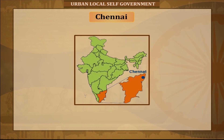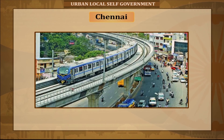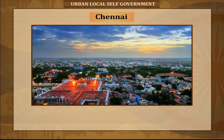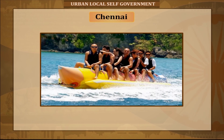Chennai, formerly known as Madras, is the capital of the Indian state of Tamil Nadu. Located on the Coromandel Coast of the Bay of Bengal, it is one of the biggest cultural, economic, and educational centers in South India. According to the 2011 Indian census, it is the fourth largest city and fourth most populous urban agglomeration in India. The city and adjoining regions constitute the Chennai Metropolitan Area, which is the 36th largest urban area by population in the world.